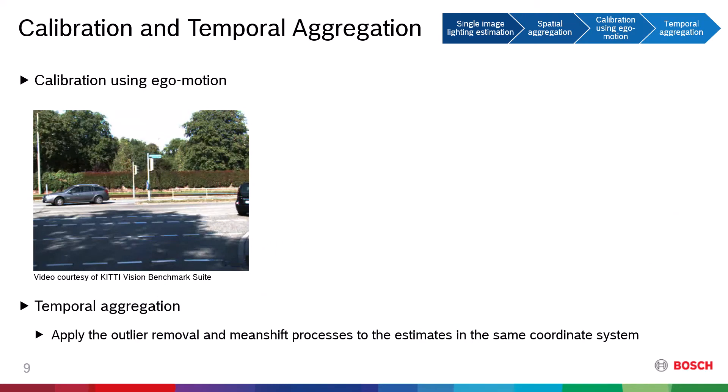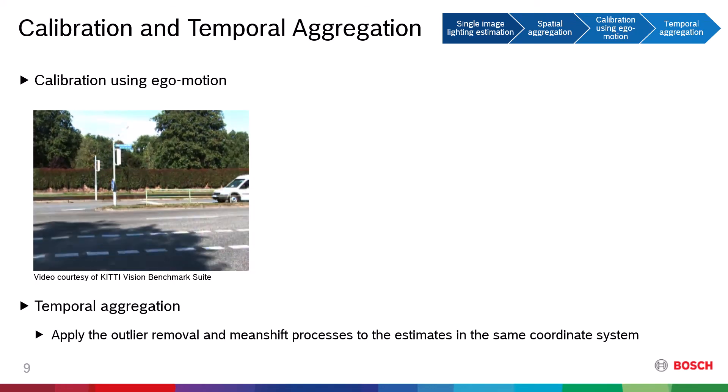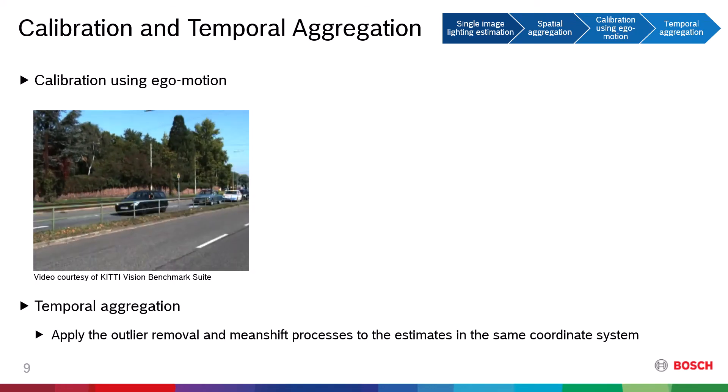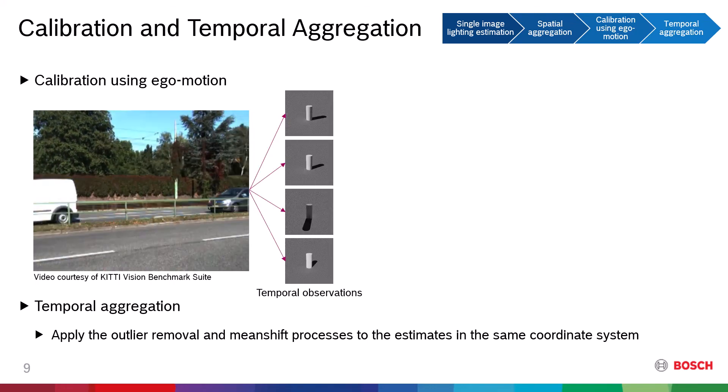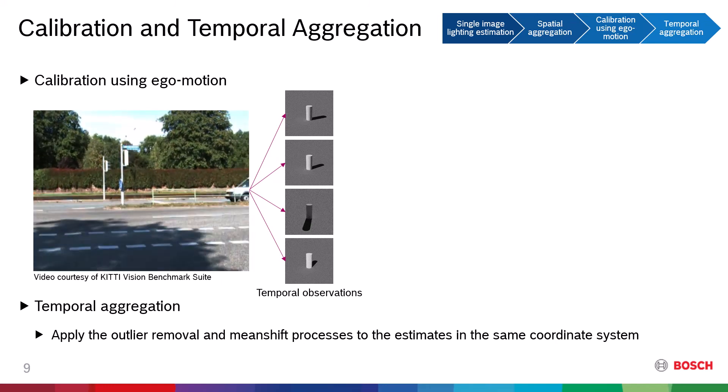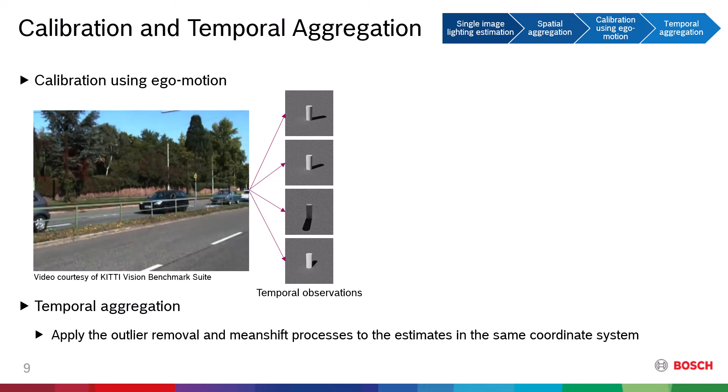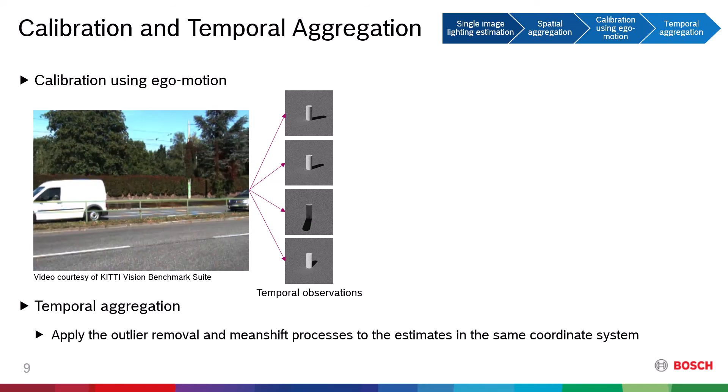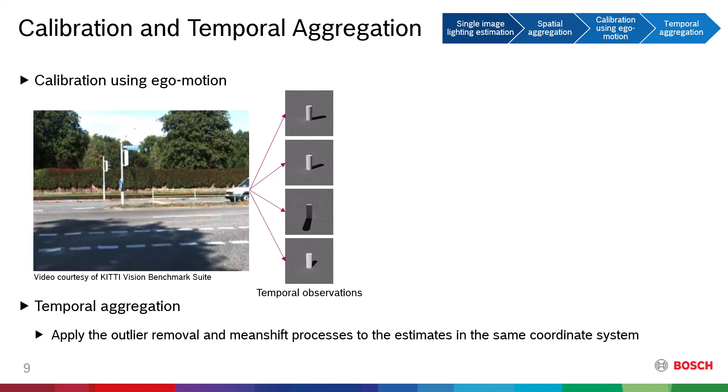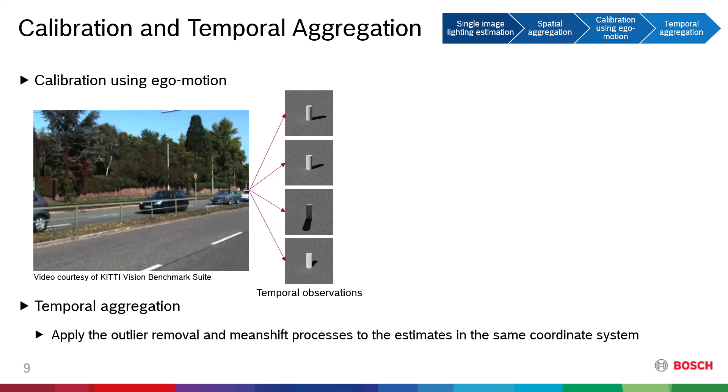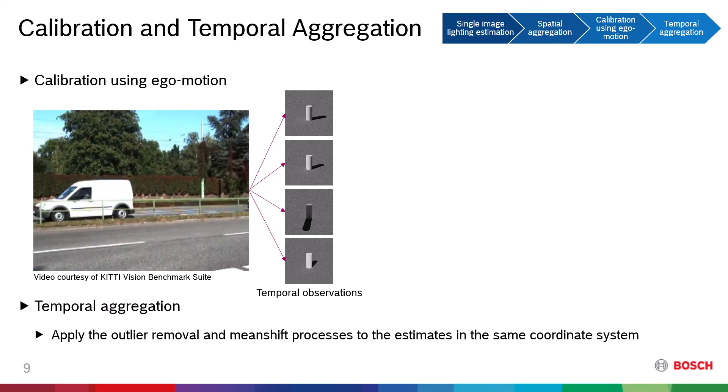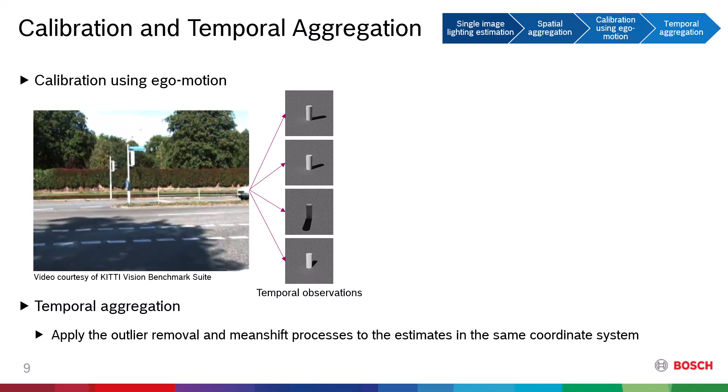The previous spatial aggregation step is done for each input image and outputs a stable lighting estimation. The resulting sun direction is, however, in its own camera coordinate system. To do the aggregation across the image sequence, we need to unify the observations made in different coordinate systems.